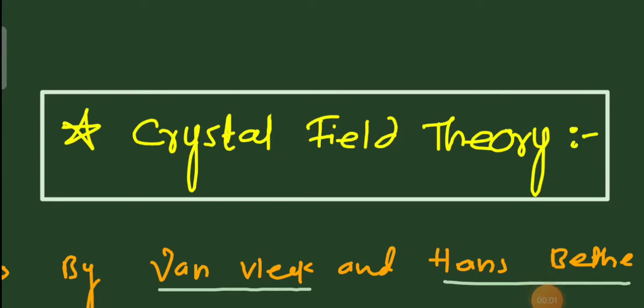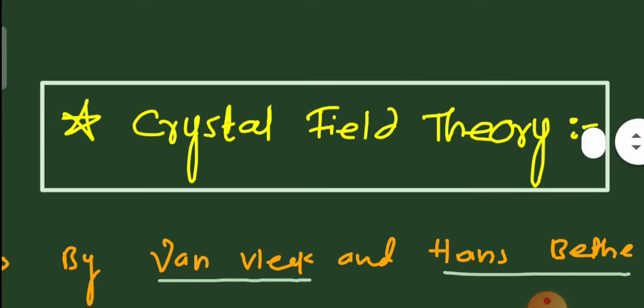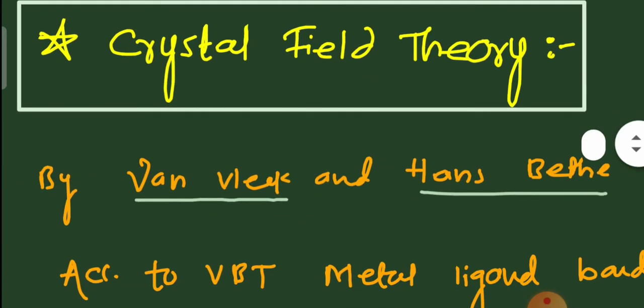Welcome everyone, this is Amit Sheikh. Welcome to the inorganic chemistry lecture. Today we will discuss one of the well-known coordination theories in inorganic chemistry — Crystal Field Theory. After valence bond theory, the second topic is Crystal Field Theory. Crystal Field Theory arose due to some limitations in valence bond theory. This theory was first given by Van Vleck and Hans Bethe.